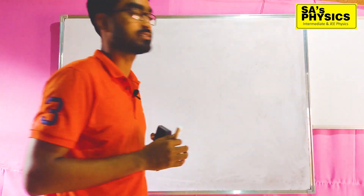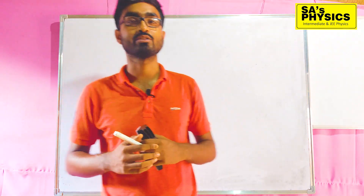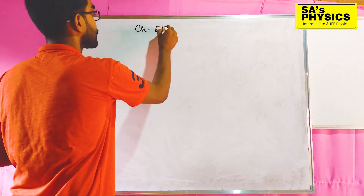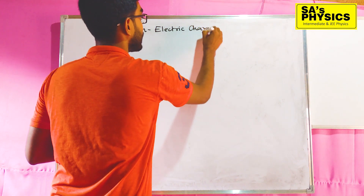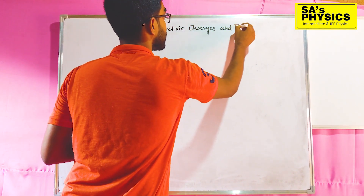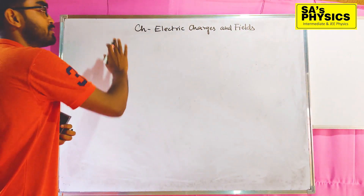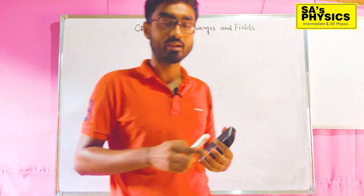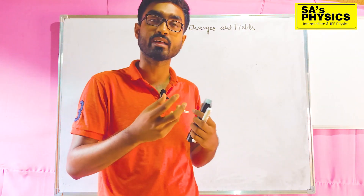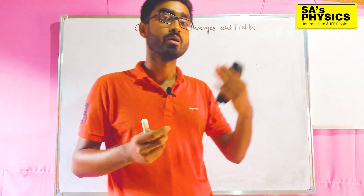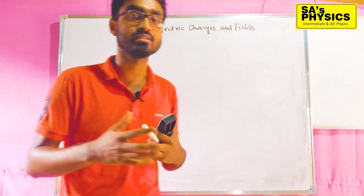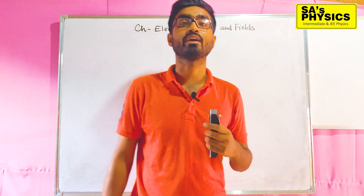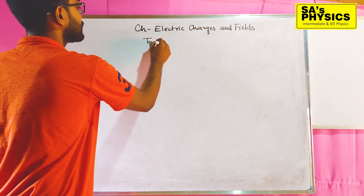I will try every week to cover important topics in physics. Today the chapter we will learn is Class 12 Electric Charges and Fields. Charge is an intrinsic property. Today I will talk about the topic Coulomb's Law.